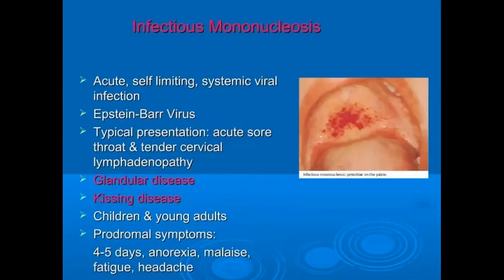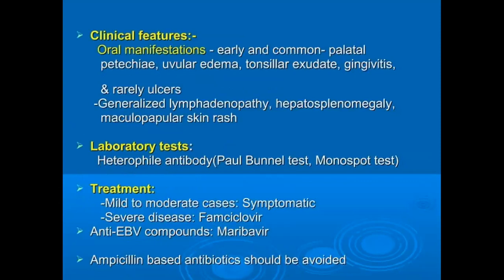Infectious mononucleosis, also called Epstein-Barr virus infection or the kissing disease, has typical presentations of acute sore throat and tender cervical lymphadenopathy. It is common in children and young adults. Prodromal symptoms such as anorexia, fatigue, and headache can last for four to five days. Mild to moderate cases are treated symptomatically.